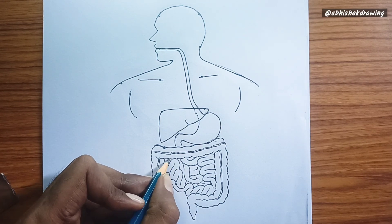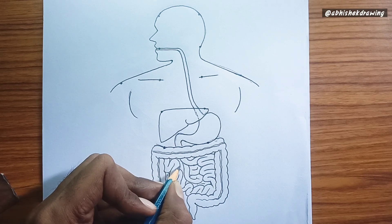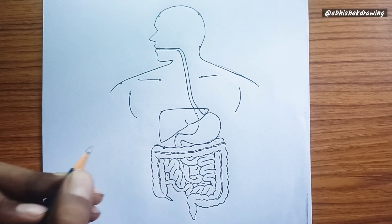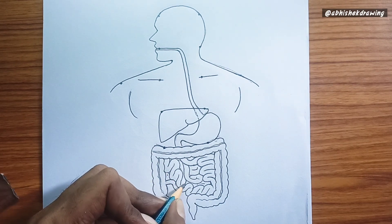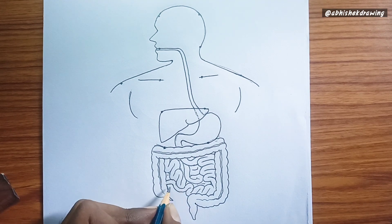The walls of the small intestine are lined with villi and microvilli, increasing the surface area for absorption into the bloodstream. Large intestine.